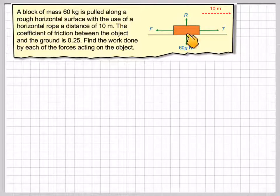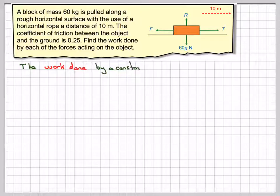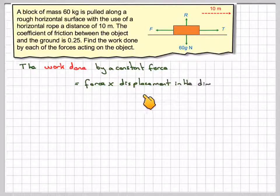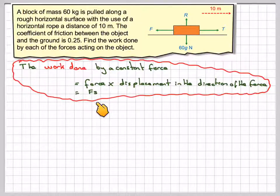So we've got a block here, it's moving in this direction, 10 meters. The work done by a constant force, we need to look at that first of all. It is equal to the force times the displacement in the direction of the force. So that is F times S. So once we find the force, we can multiply it by the displacement which is going to be 10 in this case.